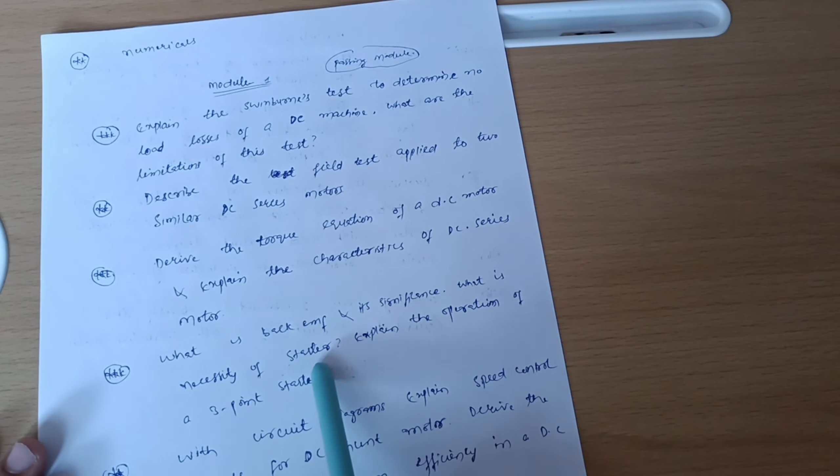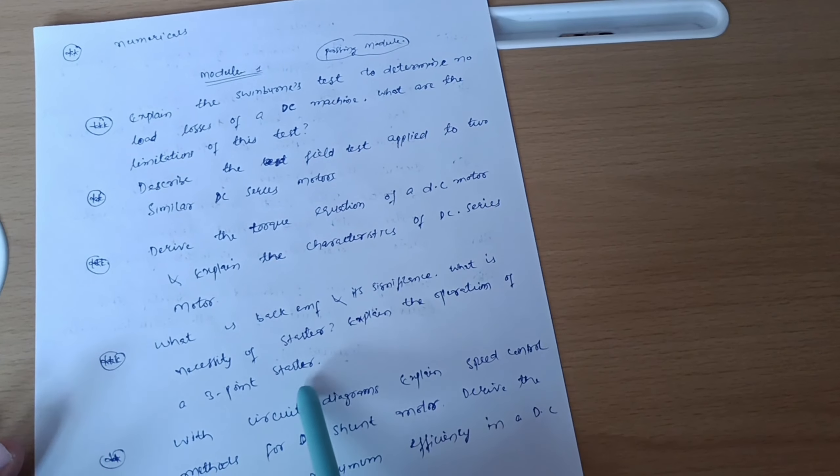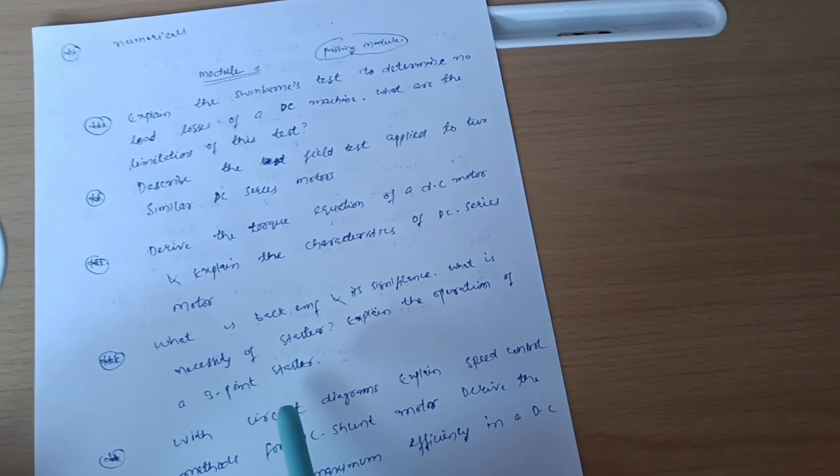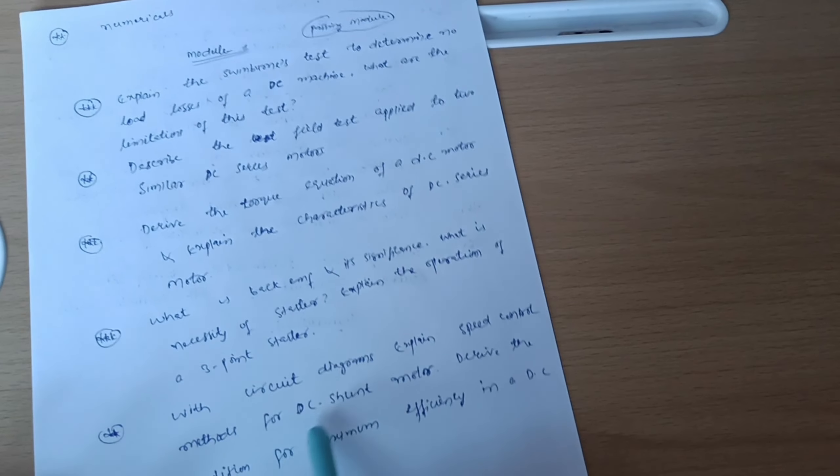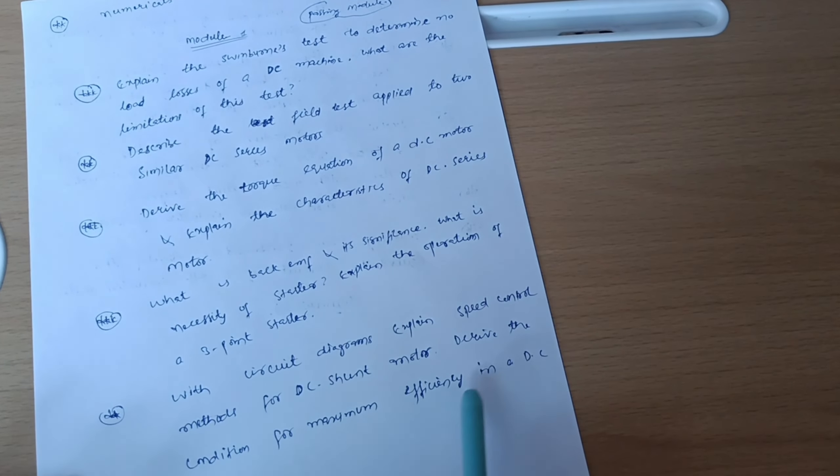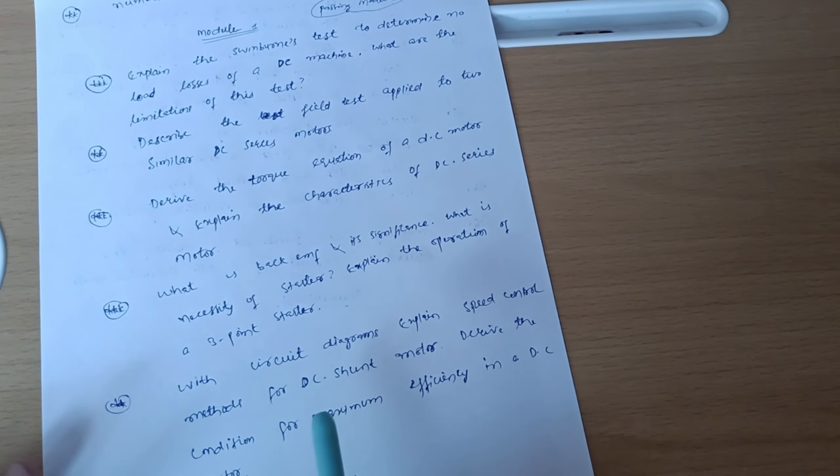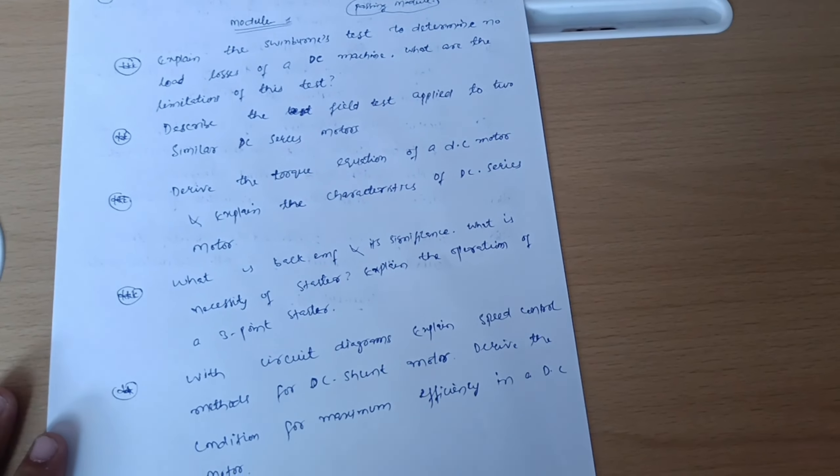What is necessity of starter and explain the operation of three point starter, or sometimes they will give four point starter, so you should be prepared with circuit diagrams. Explain speed control methods for DC shunt motor. Derive the condition for maximum efficiency in DC motor. If you are convenient with the numerical part, you should refer the numericals as I earlier mentioned which paper you have to refer.